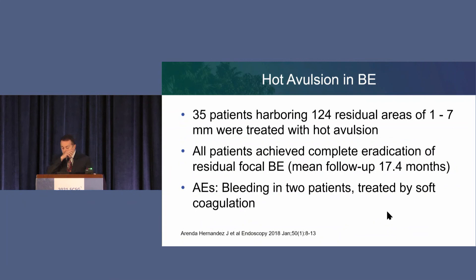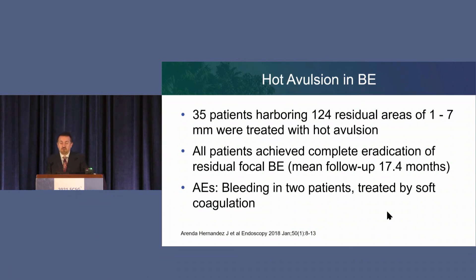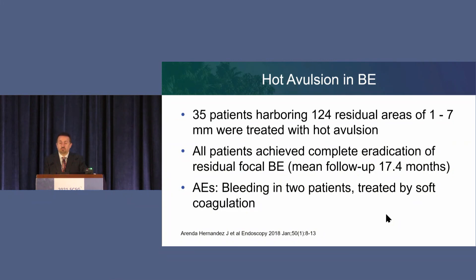There's also a relatively new method for residual small islands: hot avulsion, similar to the hot avulsion technique for colon polyps. In a study of 35 patients with 124 residual areas ranging 1 to 7 millimeters, they were treated with hot avulsion and all achieved complete eradication at about one-and-a-half-year follow-up. So hot avulsion is another option for residual Barrett's after EMR that can't be lifted.